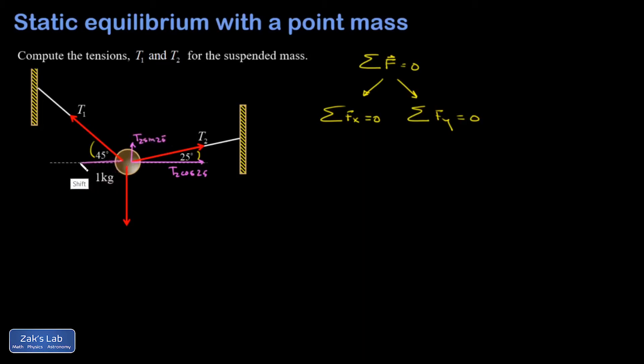Here's T1 horizontal, that's T1 cosine 45, and T1 vertical, that's T1 sine 45.